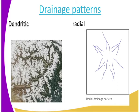Then we have the radial drainage pattern. As you can see, the radial drainage system is coming from a central part. This one is mainly like the ones that come from the mountains.